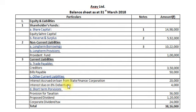Under D — Short-Term Provisions: Provision for Taxation Rs.36,000, Proposed Dividend Rs.1,20,000, and Corporate Dividend Tax Rs.24,000. When a company declares and pays a dividend to its equity shareholders, there is a liability for dividend tax on the company, known as Corporate Dividend Tax, for which the company makes provision — making it a short-term provision. The total of the Equity and Liabilities side of the balance sheet amounts to Rs.38,16,000.